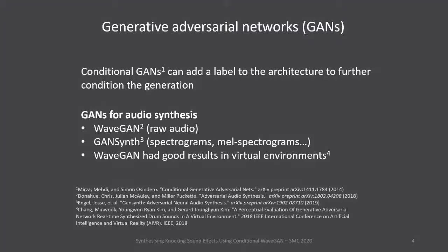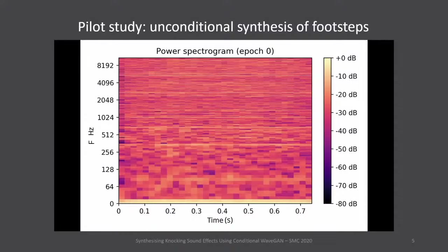Two examples of GAN architectures for audio synthesis are WaveGAN and GAN Synth. WaveGAN is trained on raw audio and produces raw audio. GAN Synth is trained on different audio representations such as spectrograms and mel-spectrograms. We chose the WaveGAN architecture because it produced good results in virtual environments, and we made it conditional. As a pilot study, we ran experiments on footstep sound effects, conditioning the WaveGAN architecture on the surface, showing how the class label makes the sounds diverge over time even when synthesized using the same input.